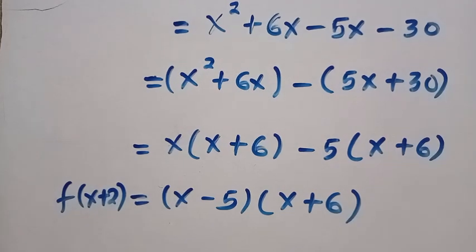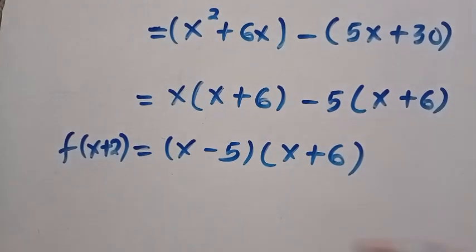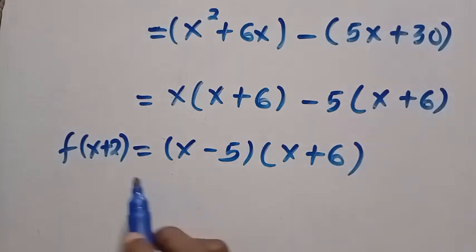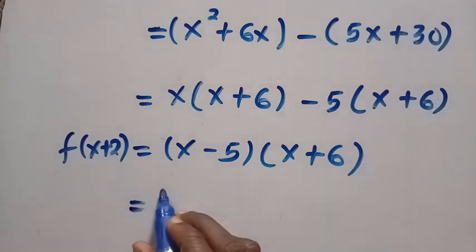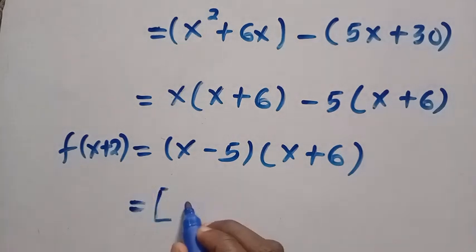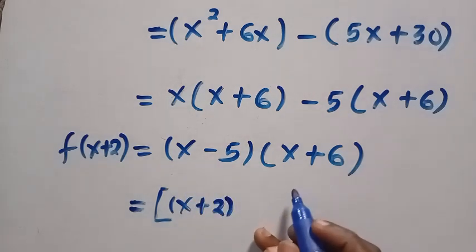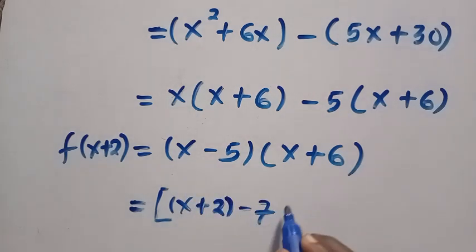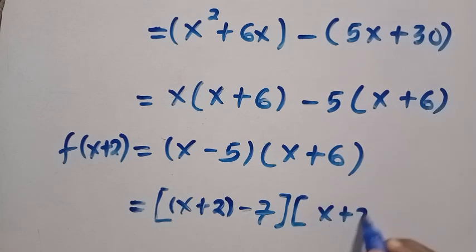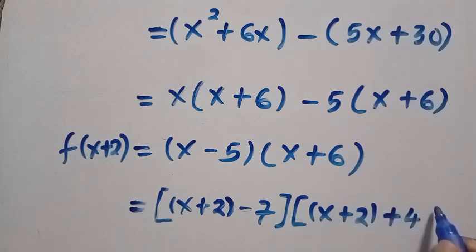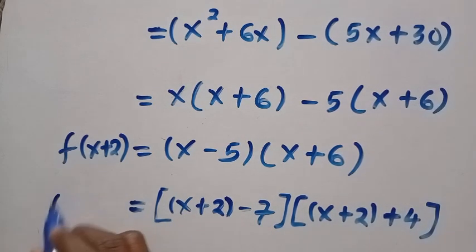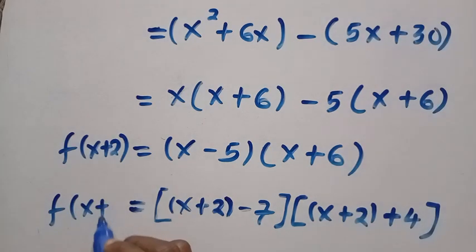After we have gotten this, we are going to manipulate x minus 5 and x plus 6 so that we can get x plus 2 from them. We need to get x plus 2. Initially it was x minus 5, therefore we have to take out minus 7 from here. And also for the second one, we need x plus 2, and it was plus 6, we have to add plus 4 to this. Everything is equivalent to f(x+2).